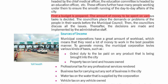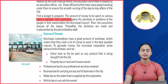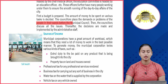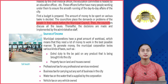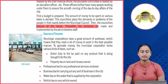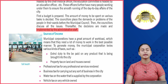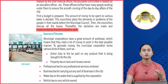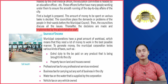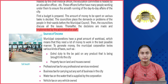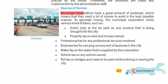First a budget is prepared — the amount of money to be spent on various tasks is decided. The councillors place the demands or problems of the people in their wards before the municipal council. Then the councillors discuss all the issues, and thereafter the decisions are made and implemented by the administrative staff. Budget allocate kiya jaata hai — roads, flyovers, hospitals, healthcare, medicine — har cheez ke liye budget allocate kiya jaata hai.